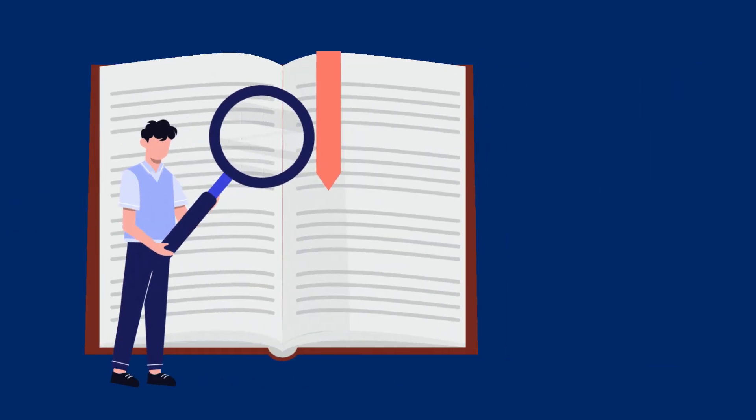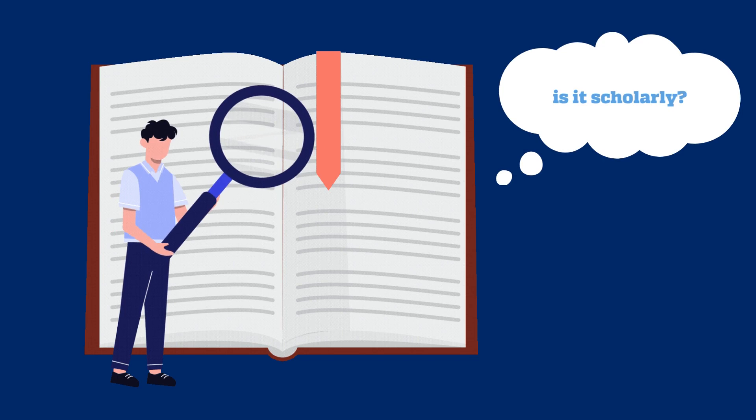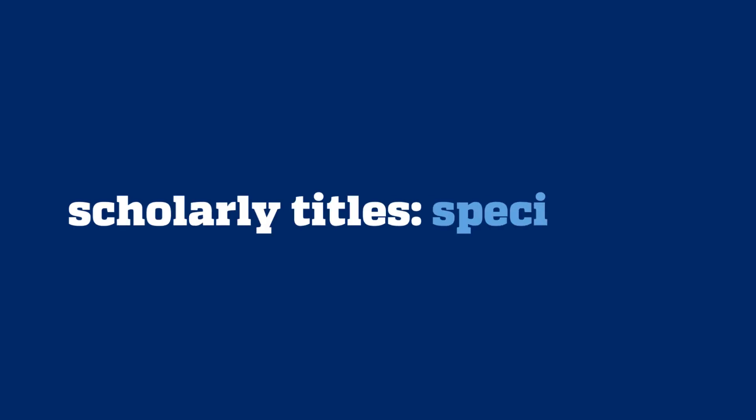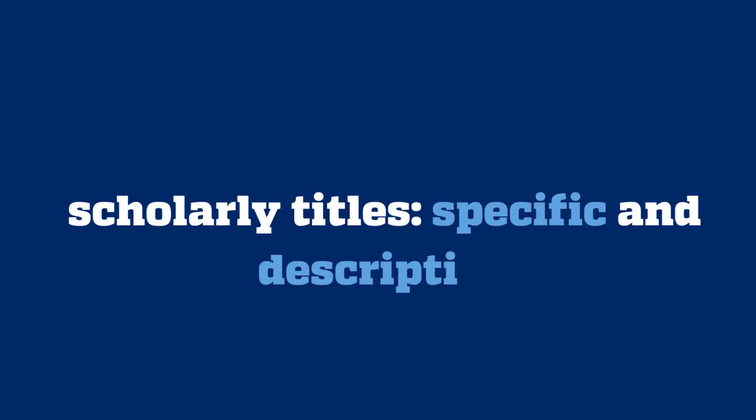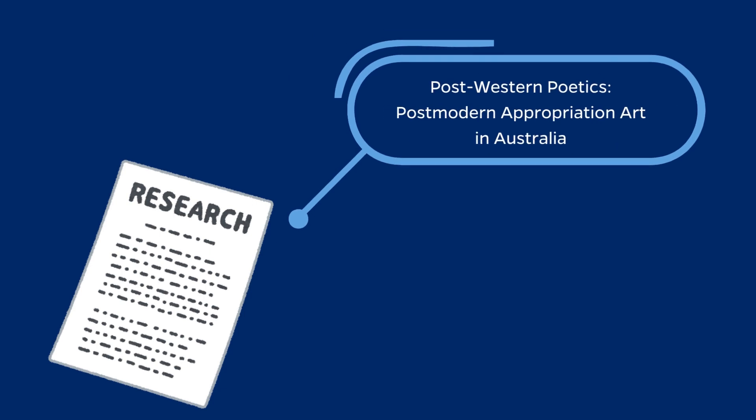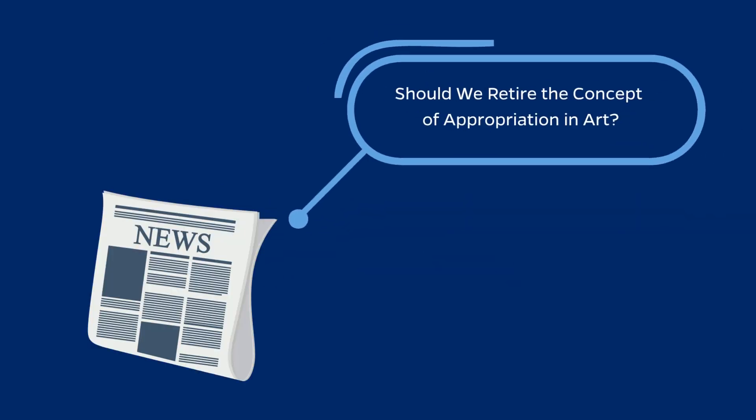So how else can you figure out if something is or isn't a scholarly article? Something as simple as an article's title can often give you a hint. Scholarly articles typically have very specific and descriptive titles and sometimes use discipline-specific jargon. For example, 'Post-Western Poetics, Post-Modern Appropriation Art in Australia.' On the other hand, a popular article title would be something more catchy like, 'Should we retire the concept of appropriation in art?' This is the type of title you'll probably find in a newspaper, magazine, or website.